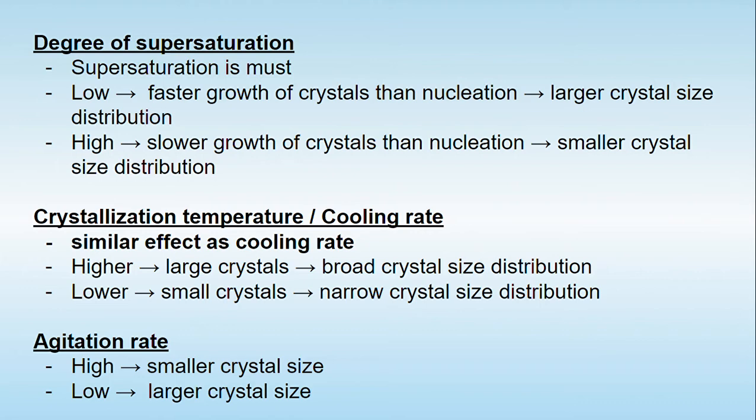Depending on whatever crystal size distribution we want, we have to keep the degree of saturation accordingly. The second important factor is crystallization temperature or cooling rate. This is very important when obtaining crystals by temperature change. If the crystallization temperature is higher and the cooling rate is higher, it leads to the formation of larger crystals with a broad crystal size distribution. If the cooling rate is lower, it produces smaller crystals with a narrow crystal size distribution.